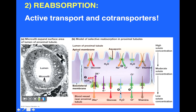Water then follows by osmosis as all these solutes build up in high concentrations. This is the general model by which important components — various electrolytes, glucose, vitamins, and water itself — are retained within our bodies through reabsorption in the proximal tubule.